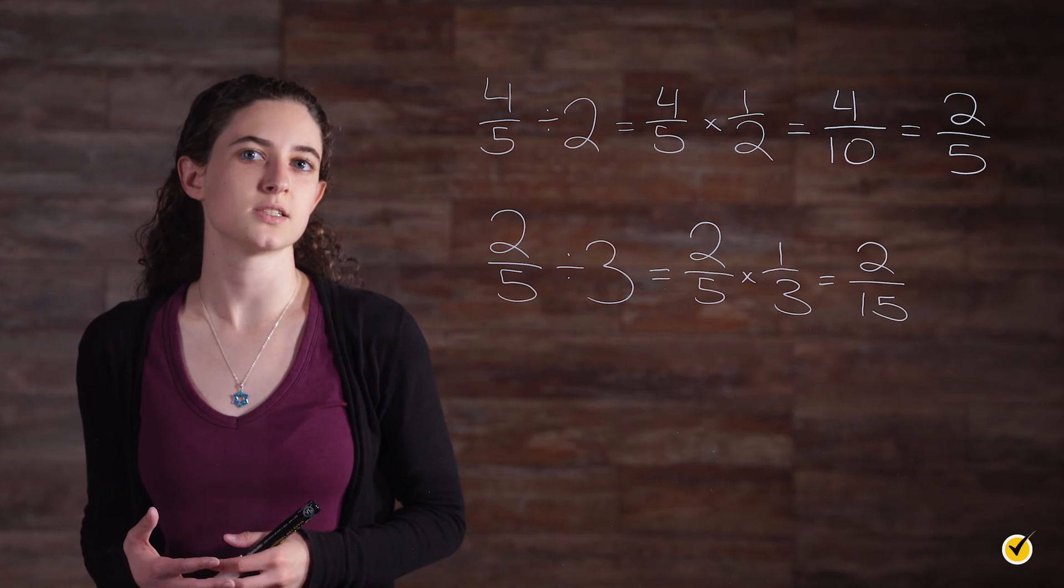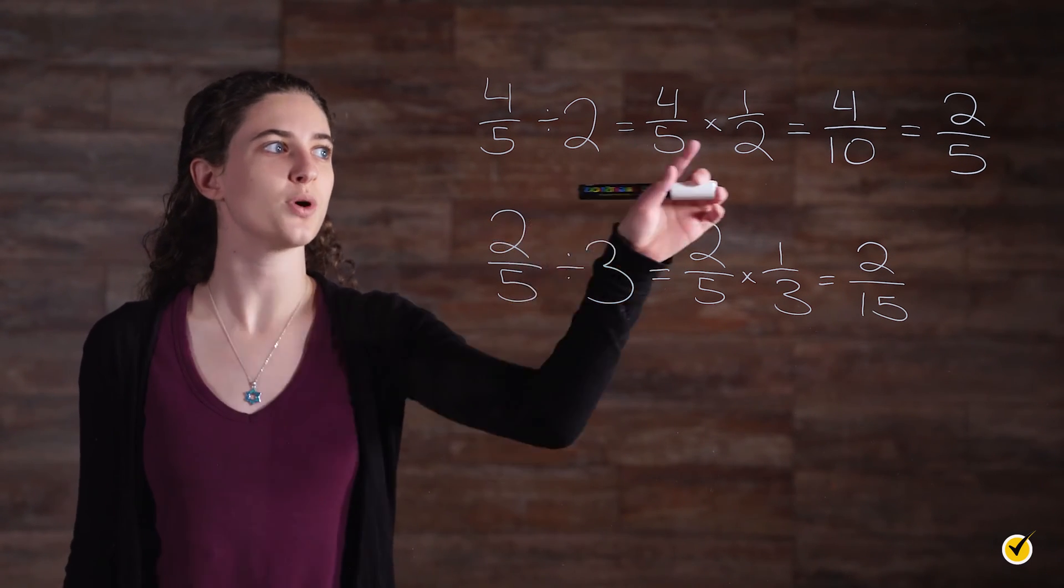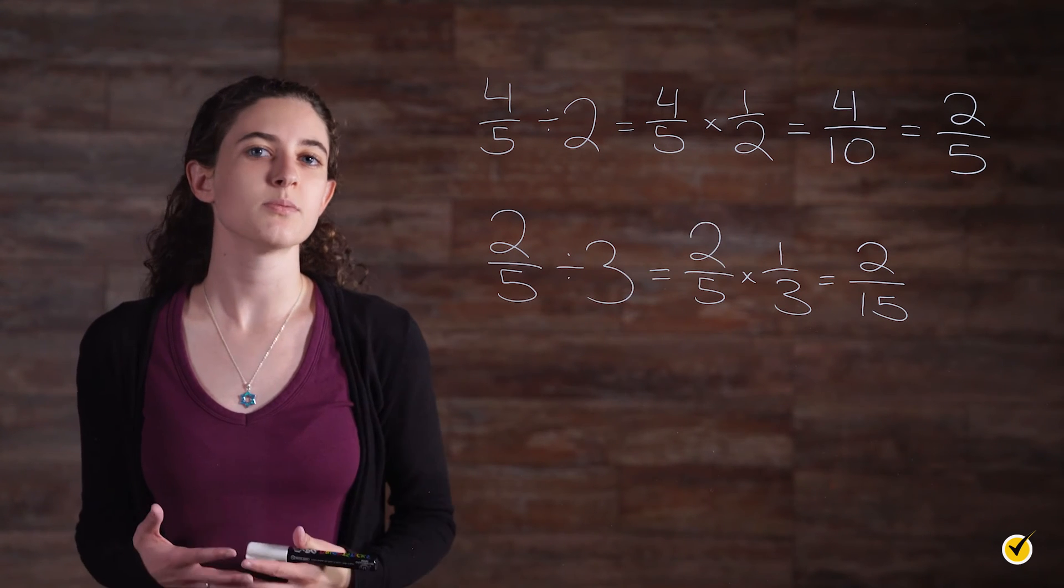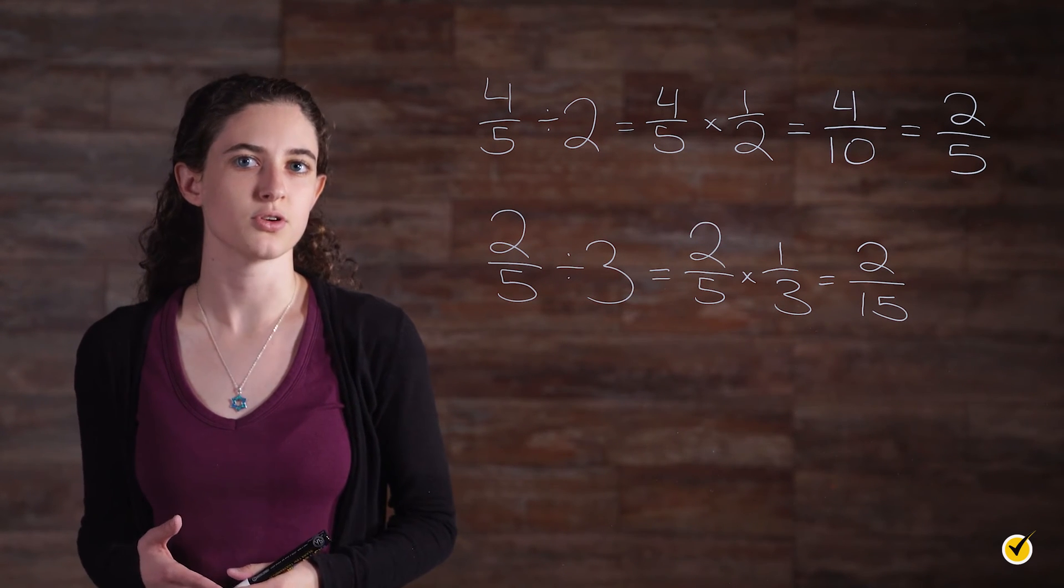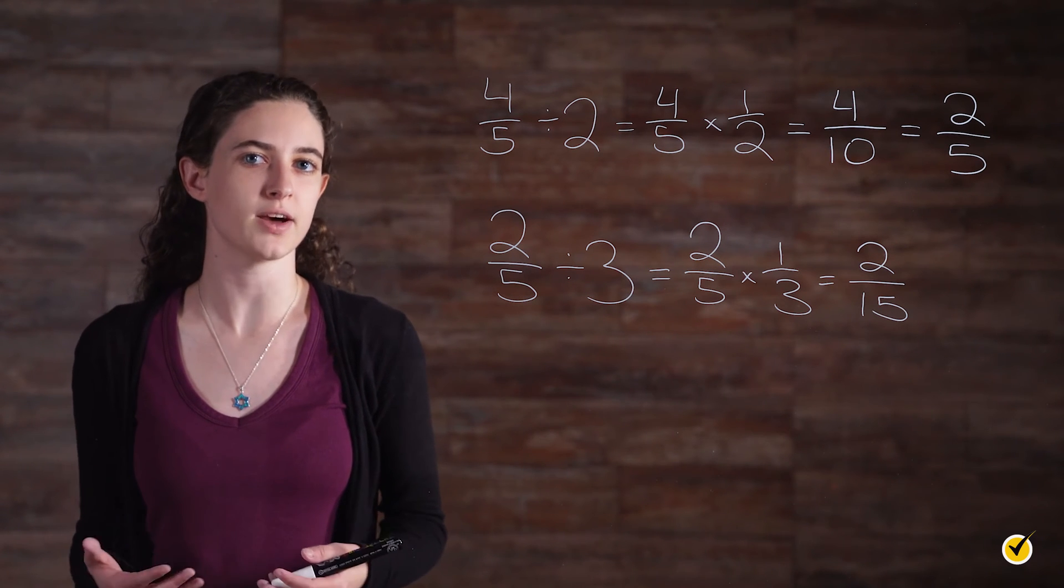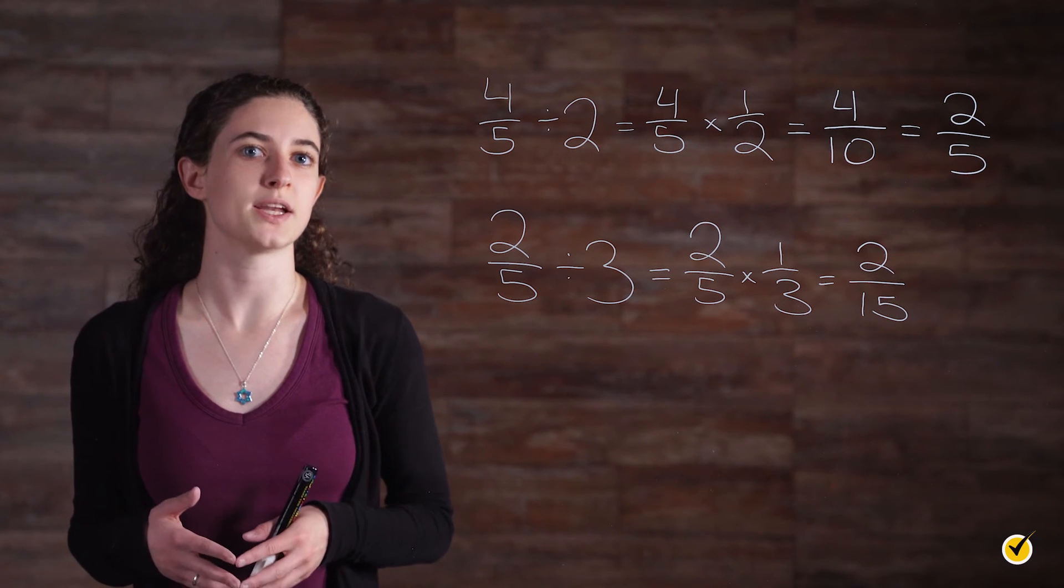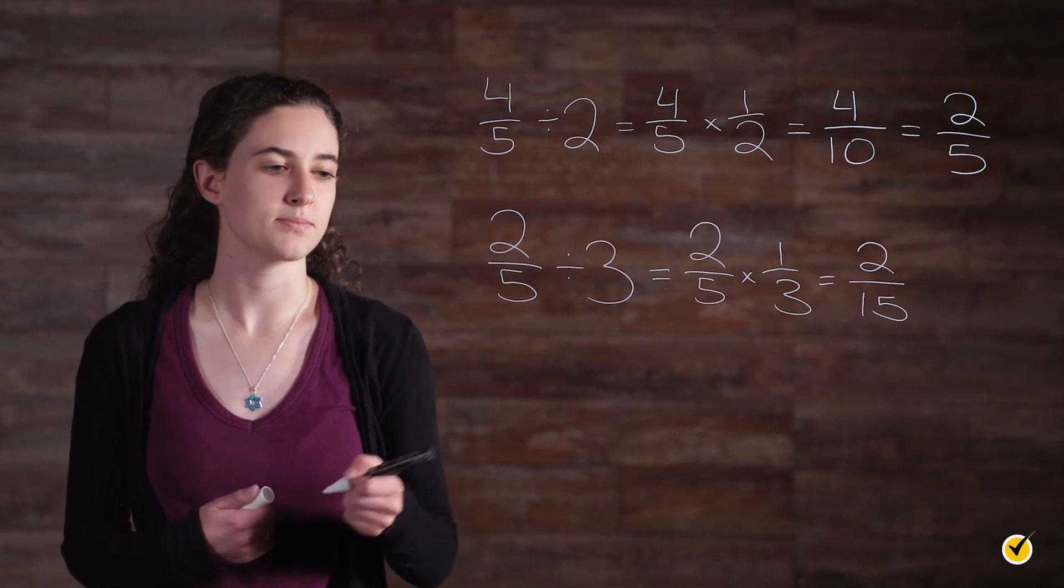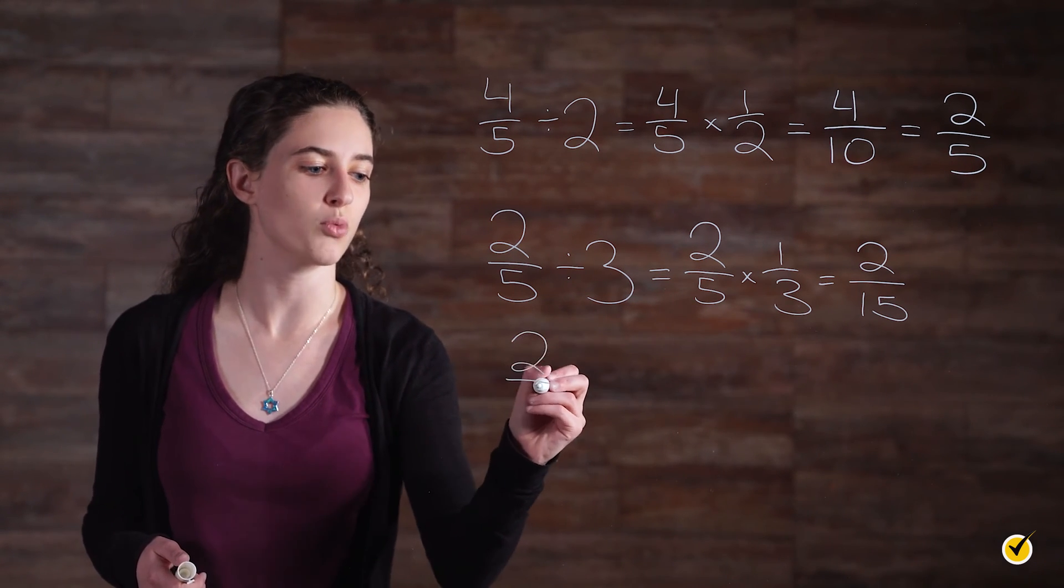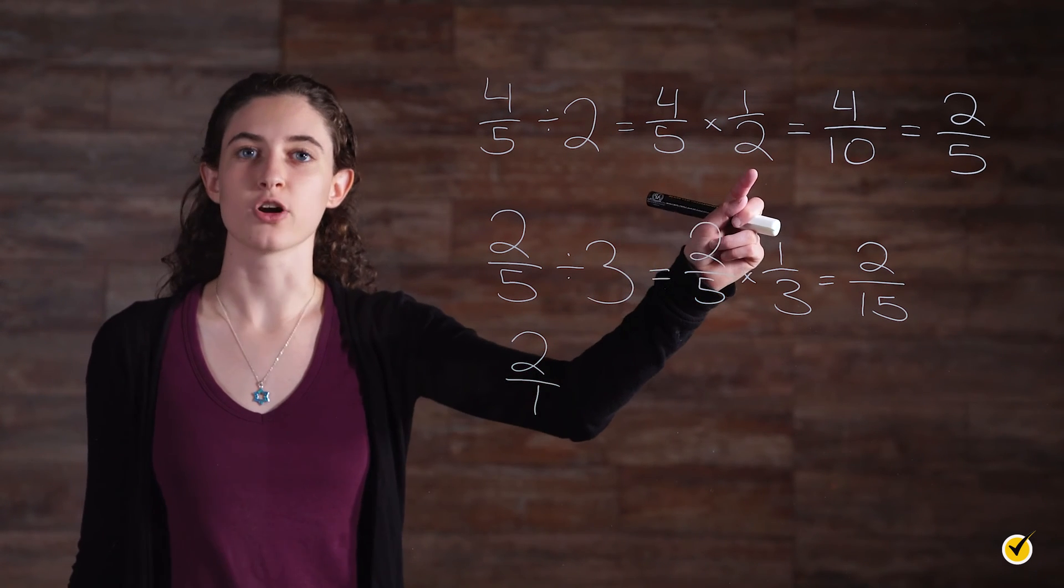Before we generalize this process, let's review some important terminology. Consider the relationship between 2 and 1 half. These numbers are called reciprocals of one another, which means that the numerator of one number is the denominator of the other, and vice versa. Remember that 2 can be written as a fraction by writing it over 1, like this. 2 over 1. Therefore, 2 over 1 and 1 half are reciprocals.